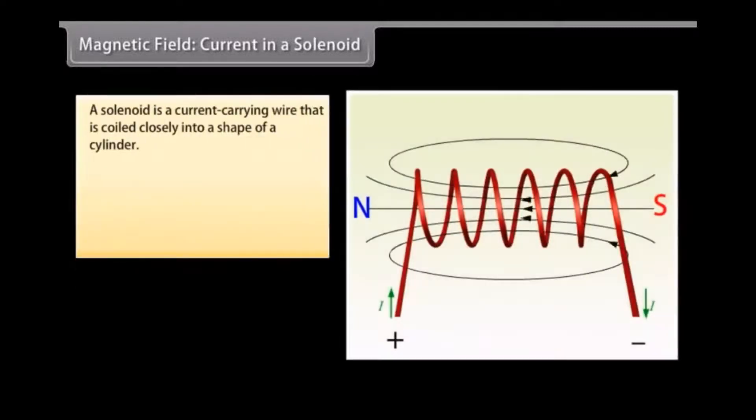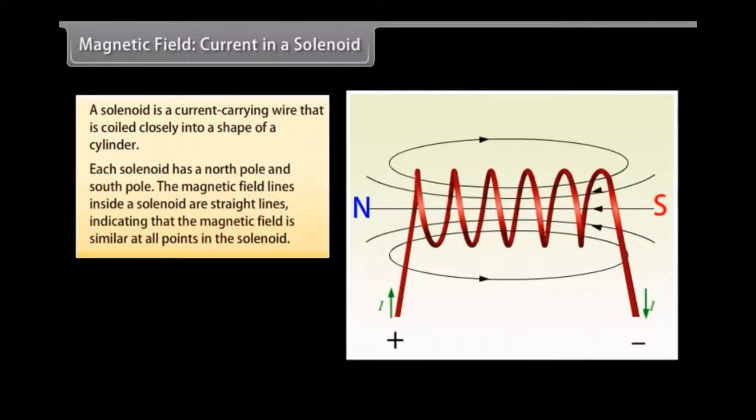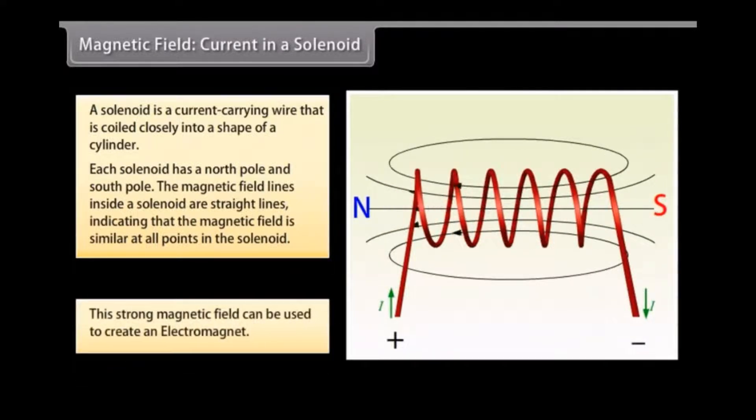Magnetic field current in a solenoid. A solenoid is a current carrying wire that is coiled closely into a shape of a cylinder with the turns as close together as possible. This is similar to a bar magnet. Each solenoid has a north pole and south pole. The magnetic field lines inside a solenoid are straight lines and indicate that the magnetic field is similar at all points in the solenoid. This strong magnetic field in the solenoid can be used to magnetize magnetic materials. This type of a magnet is called an electromagnet.